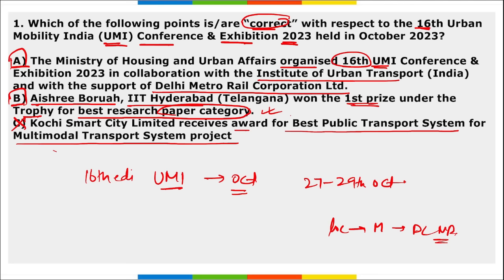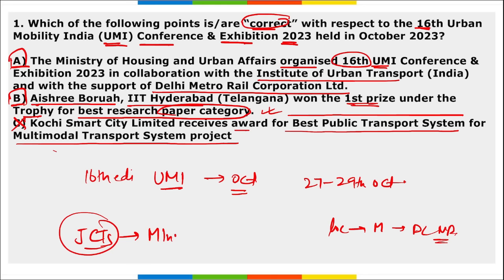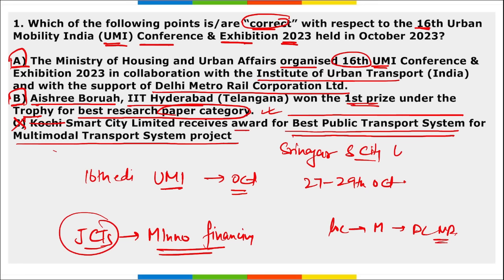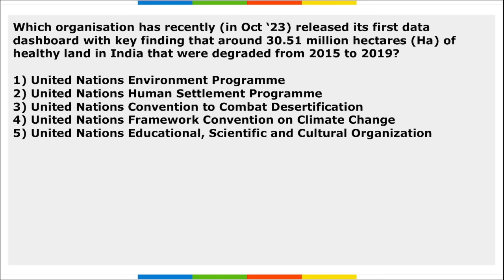Option C is incorrect — it states Kochi Smart City Limited received the award for best public transport system. Actually, it is Srinagar Smart City Limited that received the award for best public transport system. Jabalpur City Transport Service received the award for most innovative financing mechanism for sustainable city bus service. These are distinct awards.